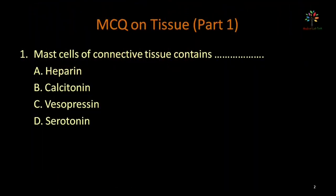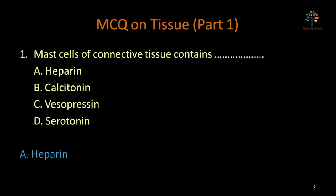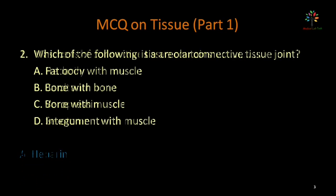Mast cells of connective tissue contain — options: heparin, calcitonin, vasopressin, serotonin. The correct answer is option A, that is heparin.